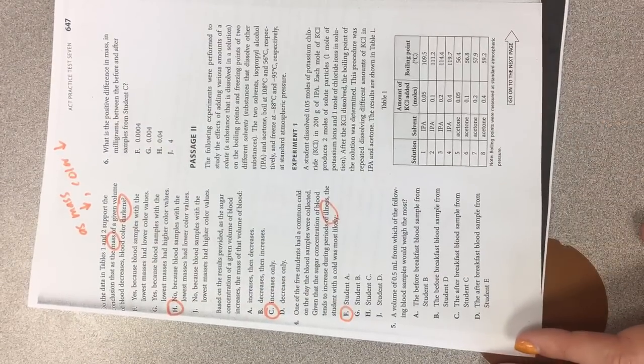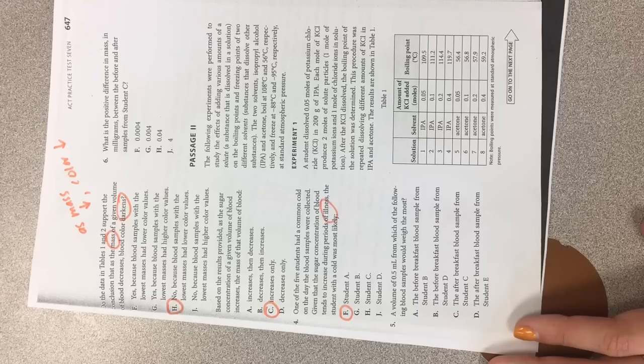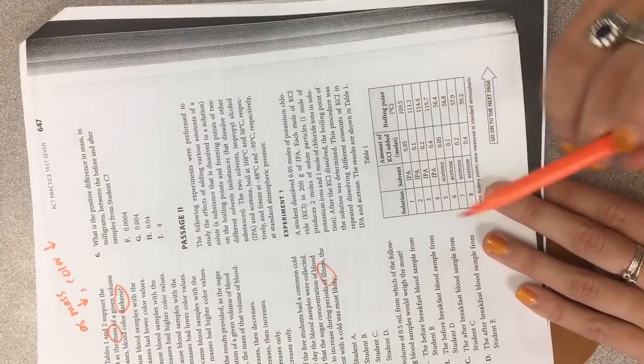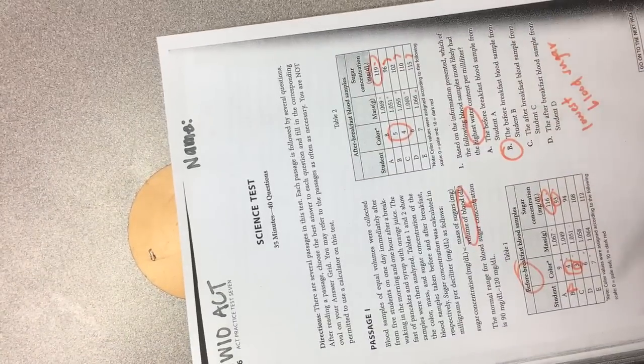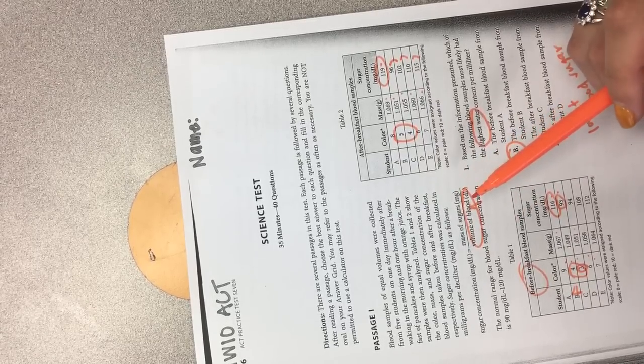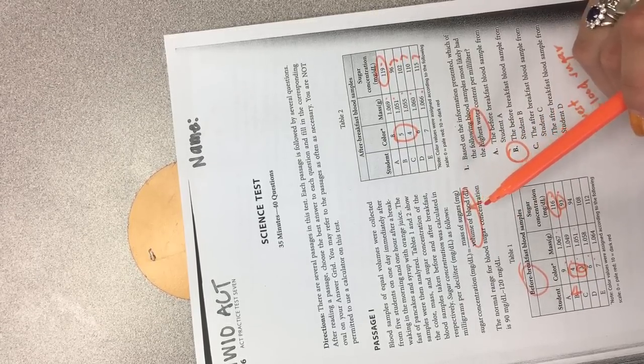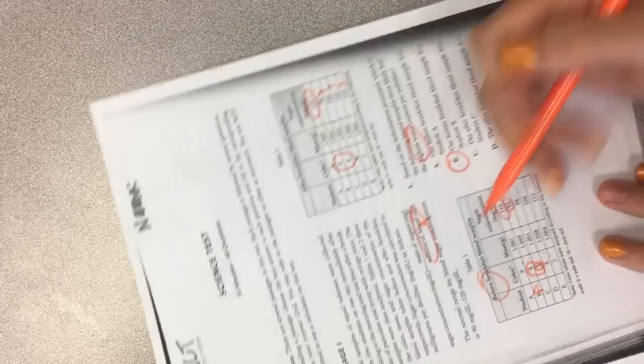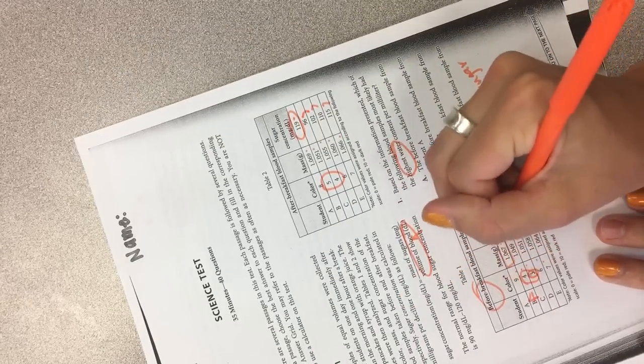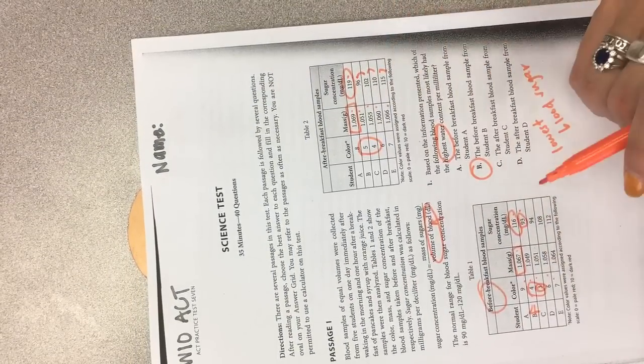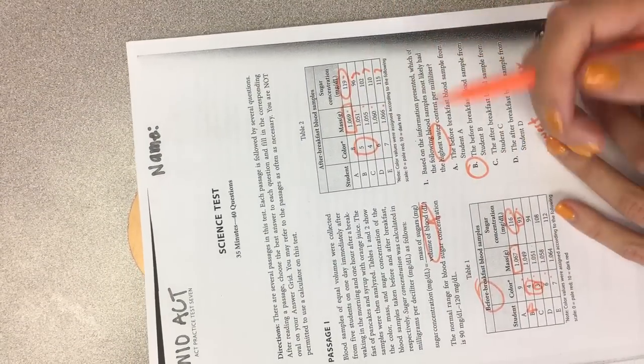Number five. A volume of 0.5 milliliters from which of the following blood samples would weigh the most. So a volume of 0.5 milliliters from which of the following blood samples would weigh the most. Let's see. How much was taken? 0.5 milliliters. Well, the highest mass here is student A.